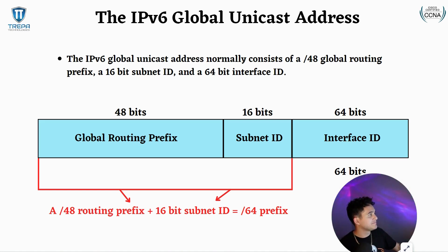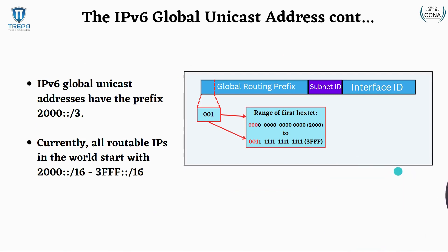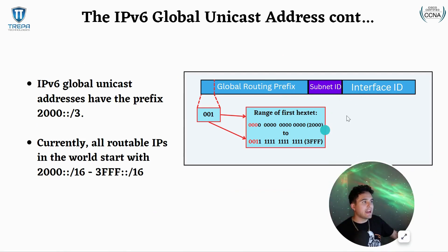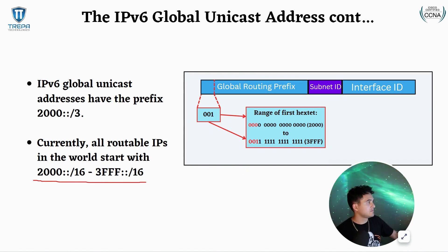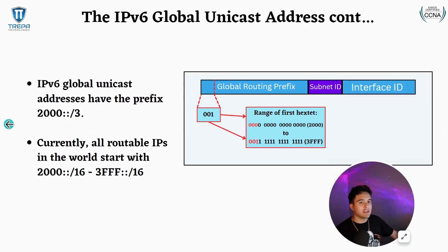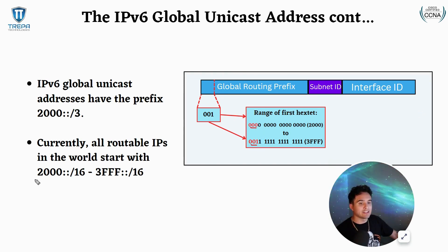The prefixes for global unicast — if you see this range, that is going to be a global unicast address. If we look at the first three bits, those are really what we're looking at to identify a global range. The address can start with the number 2 or the number 3.